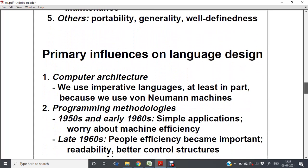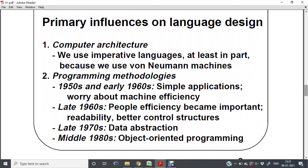Moving to the next topic: what are the influences on language design? The first and foremost thing to consider for language design is computer architecture. Because we use von Neumann architecture and von Neumann machines, the language should be supported on such machines. The other influence is programming methodologies — the way we program has changed year by year, decade by decade.